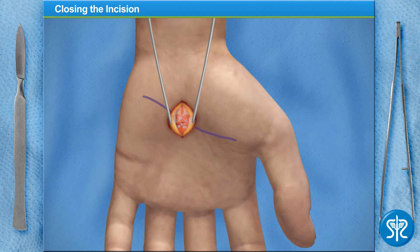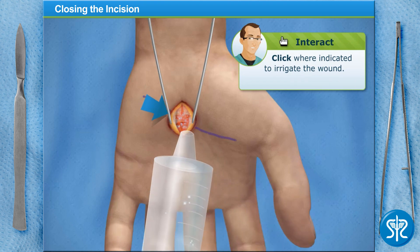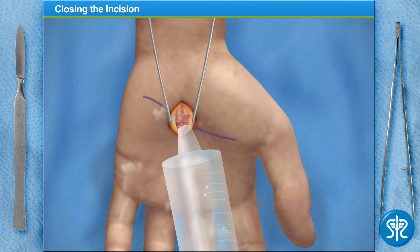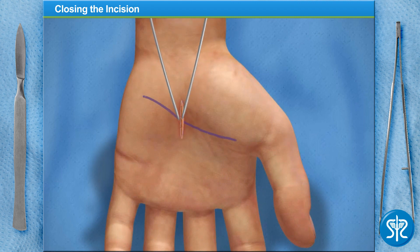Now we can begin to clean and close the incision. Go ahead and irrigate the wound. When you're finished, I'll release the tourniquet, allowing blood to flow back into the hand. Now you'll close the wound using non-absorbable sutures.